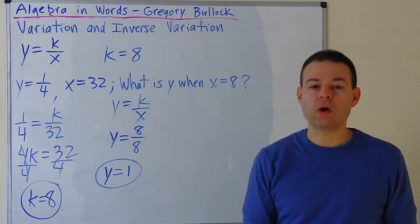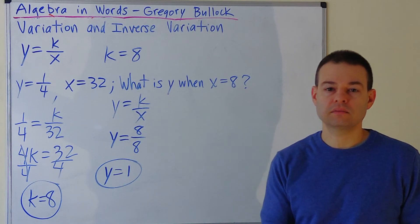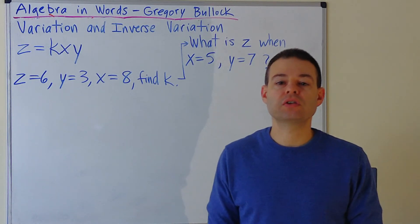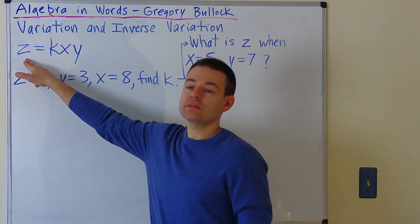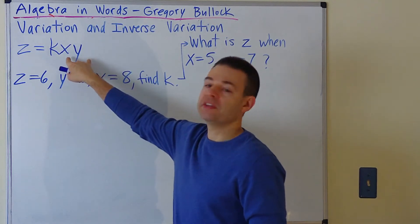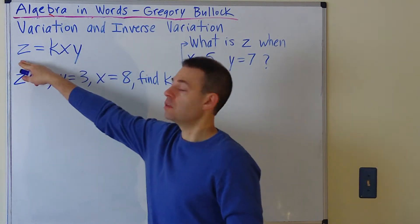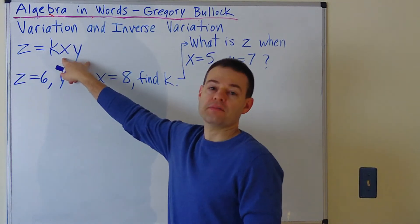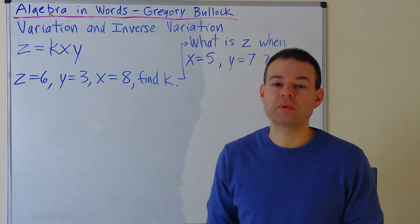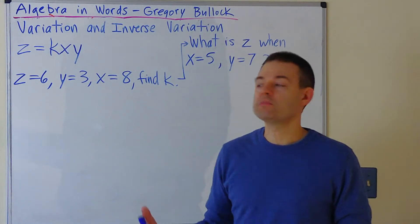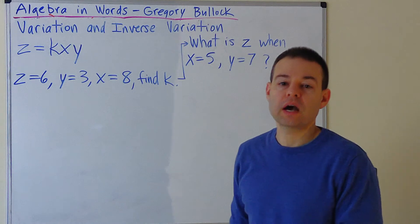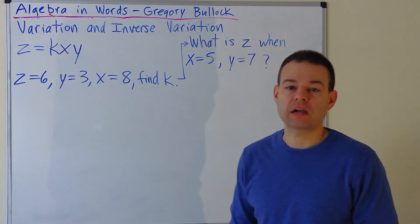The last topic is joint variation. Joint variation means one variable on the left is equal to a number of factors on the right. When the product of those factors combined goes up, the variable on the left goes up; if the product goes down, likewise the variable on the left goes down. This simulates a more real-world situation with more variables. We still have the K constant as the balancing or compensation factor to keep the left side equal to the right side.